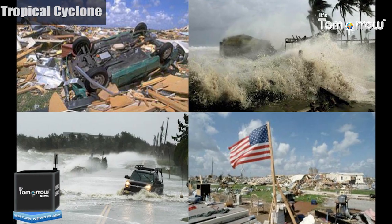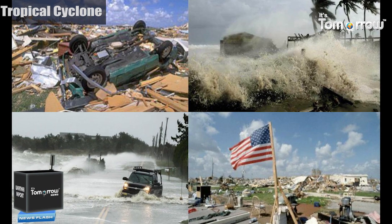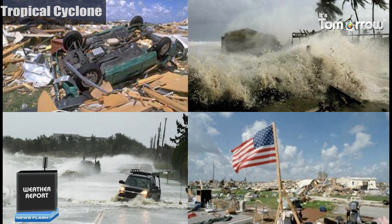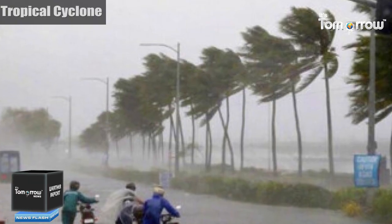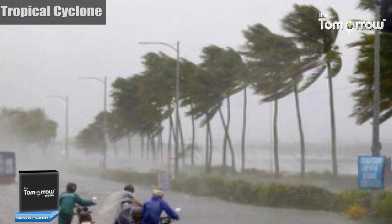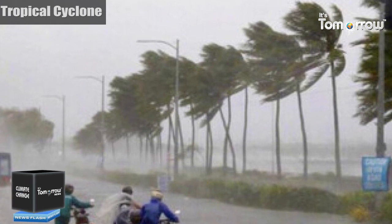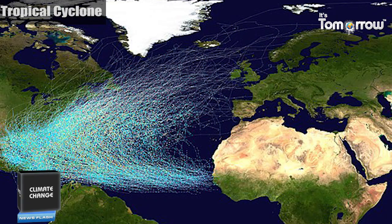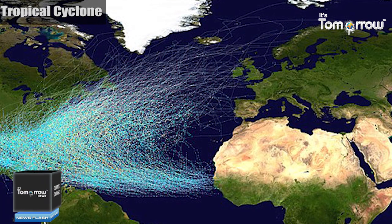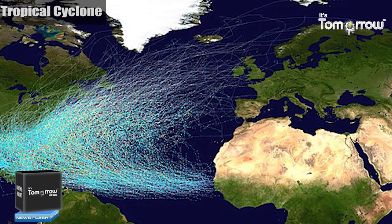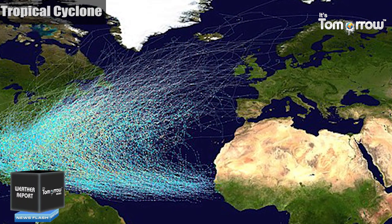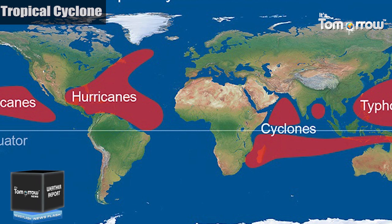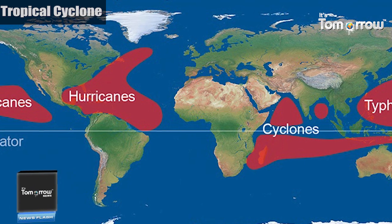Now let's understand different categories of tropical cyclones. A hurricane is a strong tropical cyclone that occurs in the Atlantic Ocean or North Eastern Pacific Ocean, and a typhoon occurs in the North Western Pacific Ocean.